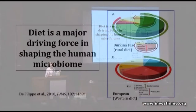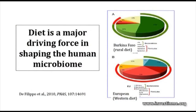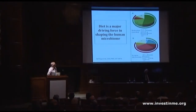A more recent study clearly illustrates this: comparing the microbiota of a population in Burkina Faso in Africa that exists primarily on a rural diet versus individuals in Italy on a Western diet. The colors are very different, reflecting a very different microbiota composition — indicative of a strong influence of diet.